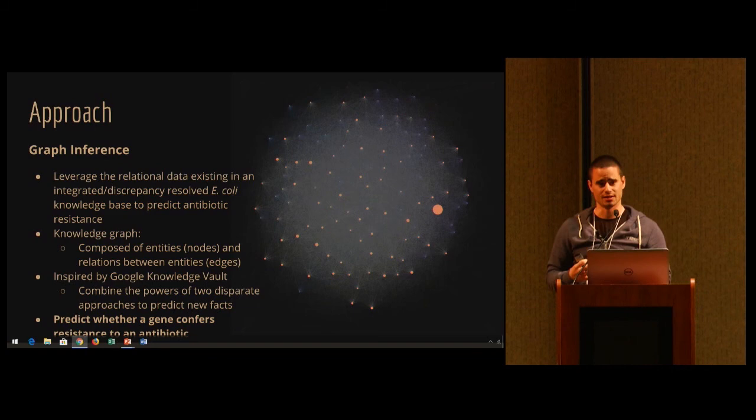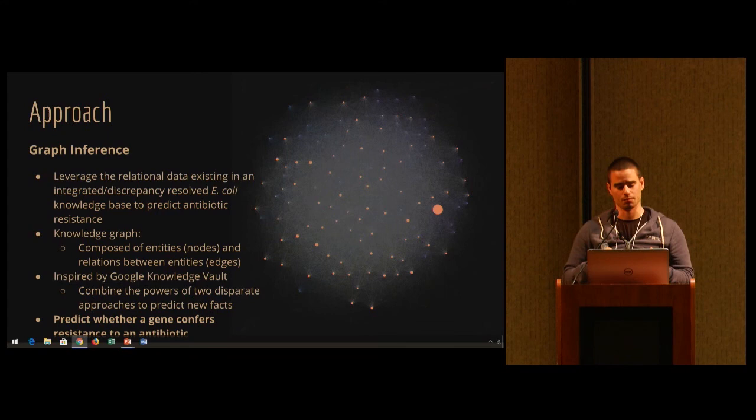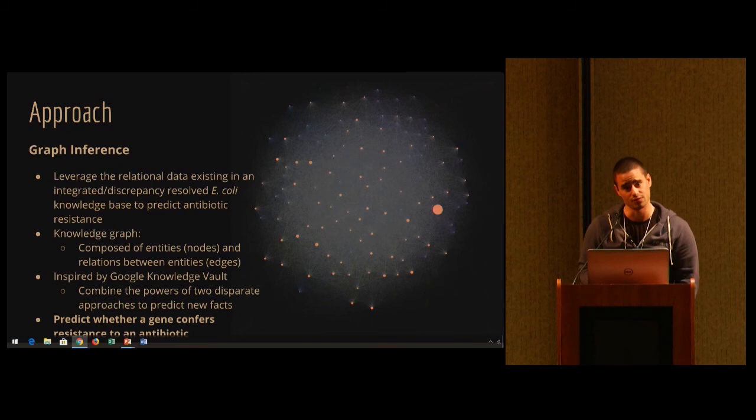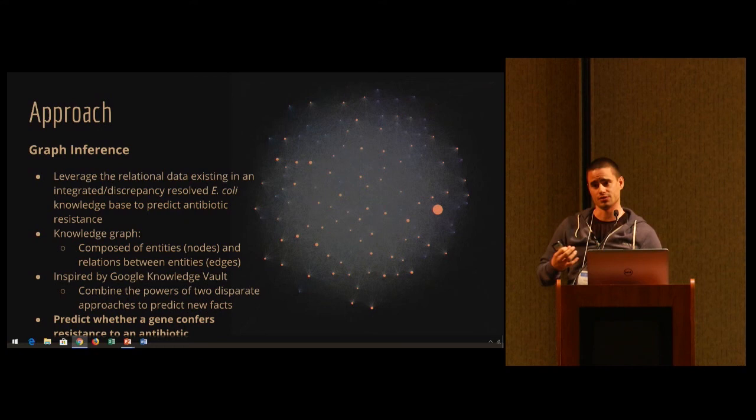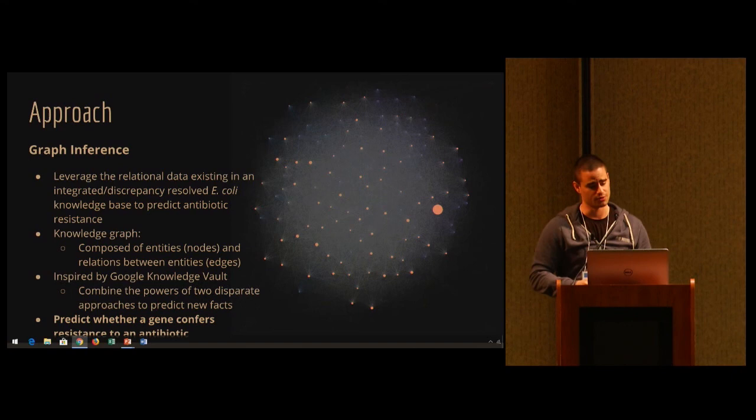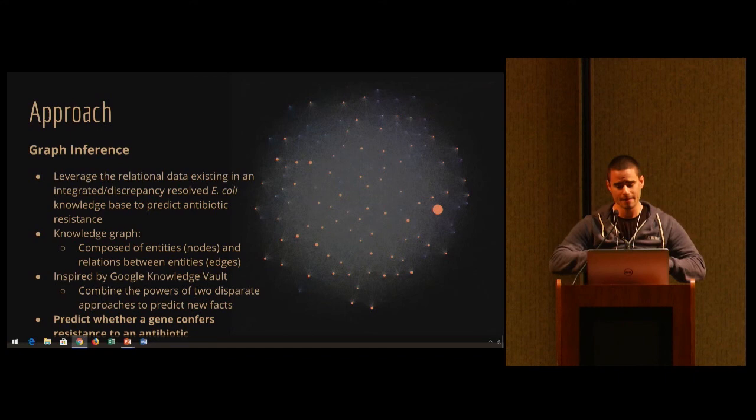The approach is graph inference. The idea is to leverage a relational database known as a knowledge graph or knowledge base. This knowledge graph is composed of entities - genes, antibiotics, molecular function, biological process. These nodes are connected to other nodes via relations or edges. A gene can activate another gene and a gene can confer resistance to an antibiotic. The idea is to take in all this information and learn from it to predict new relations between existing entities - a new gene conferring resistance to an antibiotic.